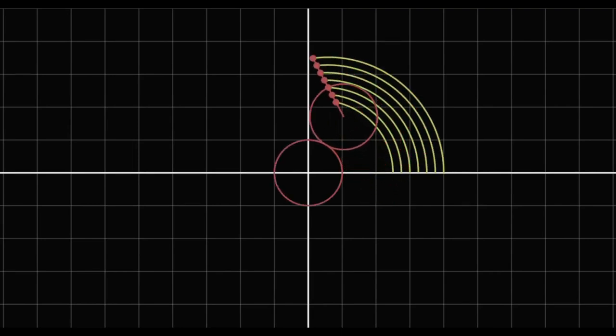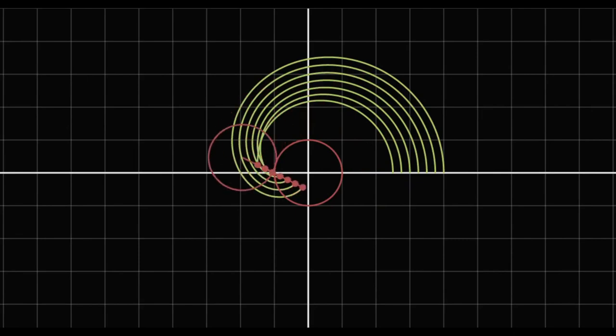Just like the trochoid, we don't necessarily have to put the point on the circle. The general case of curves traced out by circles rolling on circles of the same size are called limaçons.